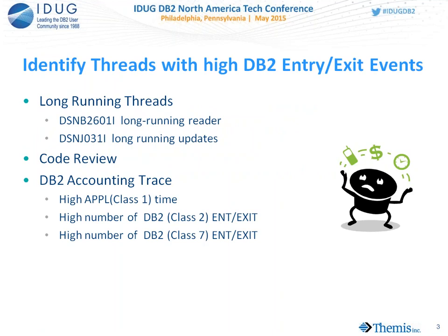The first thing is to identify your DB2 threads with high DB2 entry-exit counts. Any thread with a high entry-exit point is a suspect thread — one you may be able to tune significantly to reduce the trips to DB2. DB2 also generates messages for long-running readers and for those threads with a long-running unit of recovery — long-running updates, inserts, or deletes — and you will get message DSN JU031. Those are the applications you need to examine to see if they are doing the appropriate commit frequency.